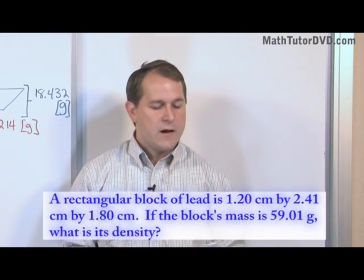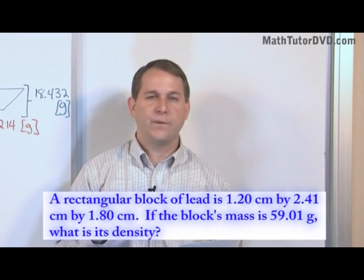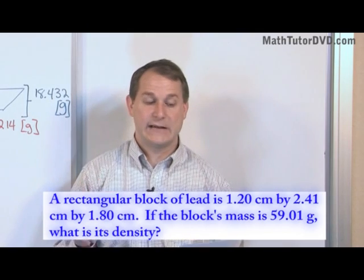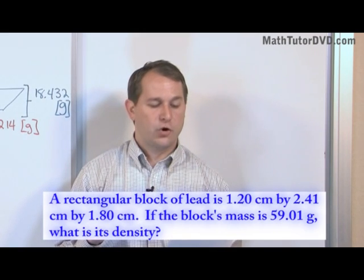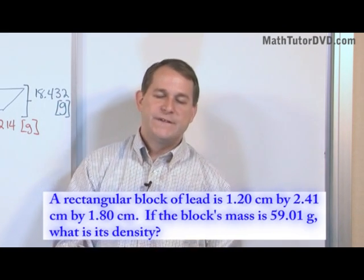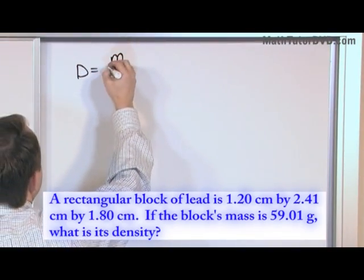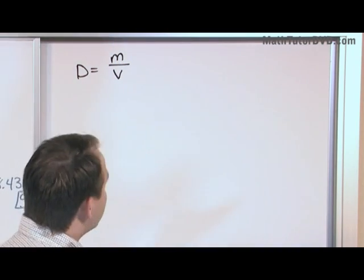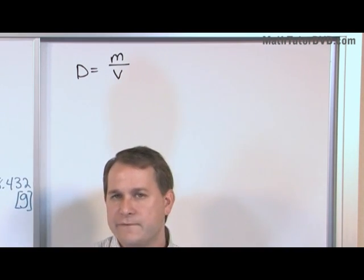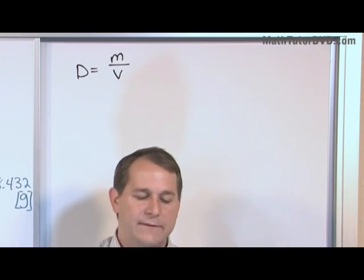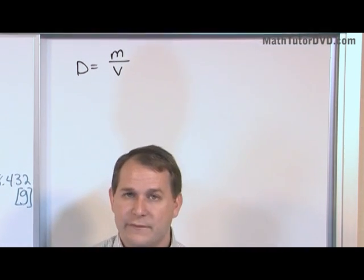The next problem: a rectangular block of lead is 1.2 centimeters by 2.41 centimeters by 1.8 centimeters on each of its sides. If the block's mass is 59.01 grams, what is its density? Same exact concept — the density of any substance equals its mass divided by its volume. We know the mass — 59.01 grams — but the problem doesn't give us the volume directly, so we have to find it.